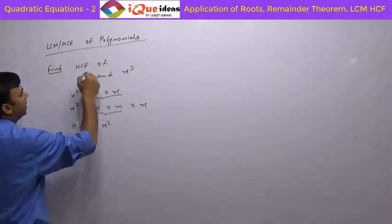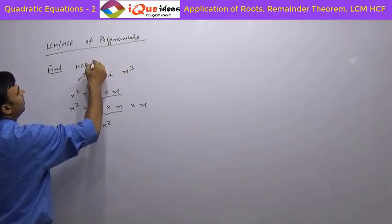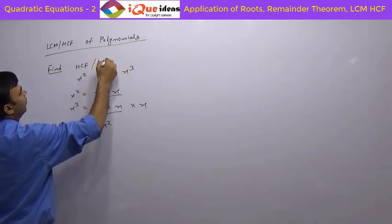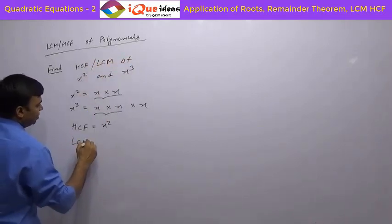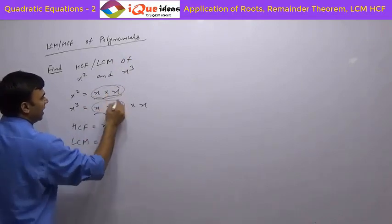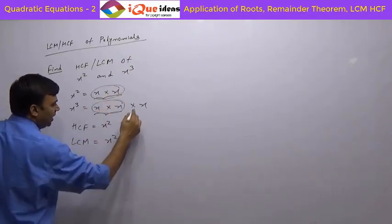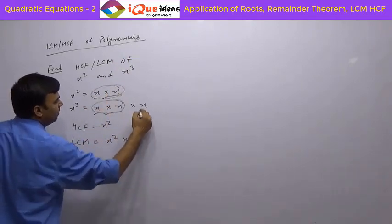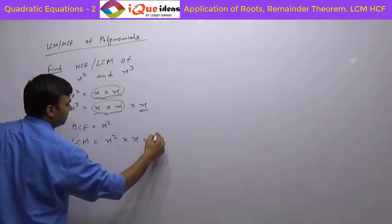And what is the LCM in this case? In case of LCM, the common part has to be taken only once. So x square into the remaining part everywhere — so it is x cube.